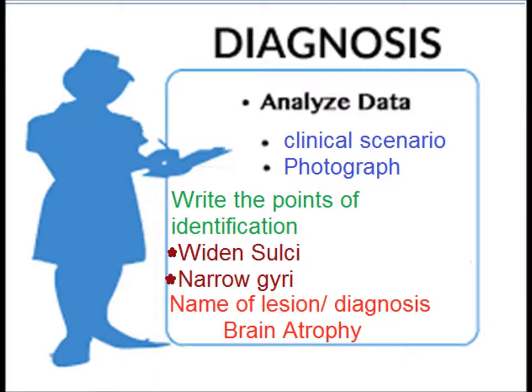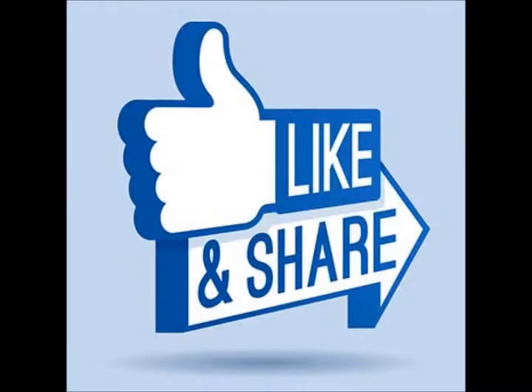The diagnosis of this case, analyzing the clinical scenario along with the photograph: the points of identification are widened sulci and narrowing of the gyri, and the diagnosis is brain atrophy. Hope you liked the presentation — please like and share.